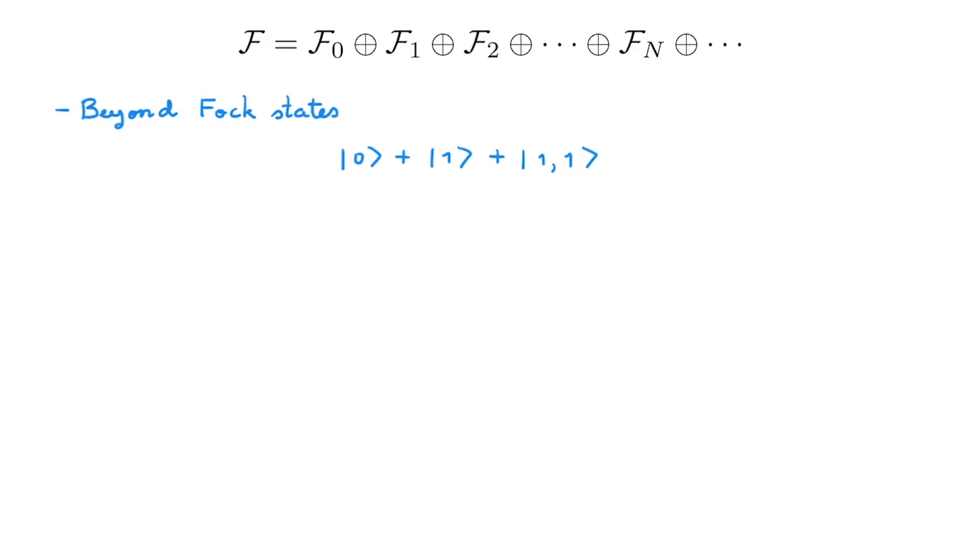So in this language this is a state that is a superposition state of the vacuum state, a single particle state, and a two-particle state in which the two particles occupy two different states. This state has some amplitude of having zero particles, some of having one particle, and some of having two particles. A state like this one is a very clear example of how Fock space allows us to treat systems with a variable number of particles.